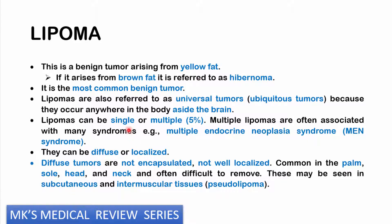Lipomas could either occur singly or they could be multiple. More commonly, they occur as single entities. In about 5% of cases, you have multiple lipomas, and in that case you may have some underlying conditions such as multiple endocrine neoplasia syndrome, or MEN syndrome. These lipomas could either be diffuse or localized. Generally, the rule of thumb is that localized tumors tend to be encapsulated — a feature of most benign tumors. But with diffuse lipomas, they sometimes do not have a capsule and are not so well localized. Diffuse tumors are commonly found in the palms, the soles of the feet, the head, and the neck, and they often present as very difficult things to remove. They may also be seen in subcutaneous as well as intermuscular tissue, and we refer to those as pseudolipomas.